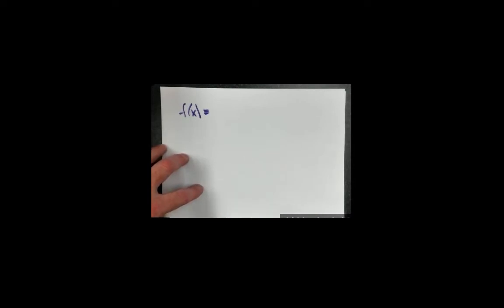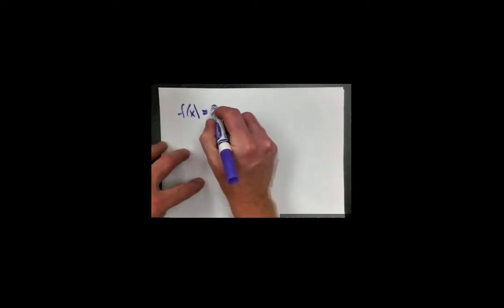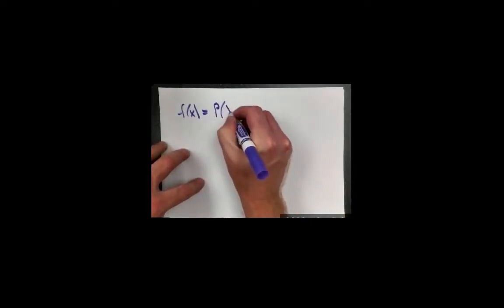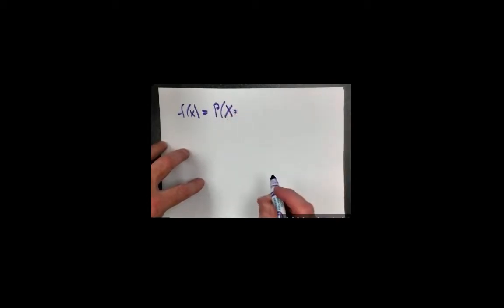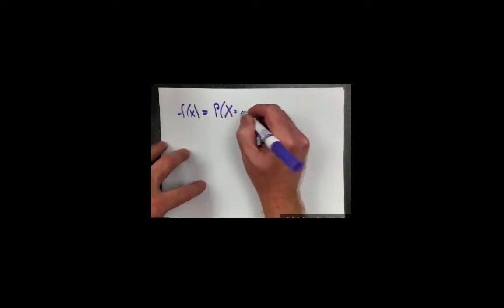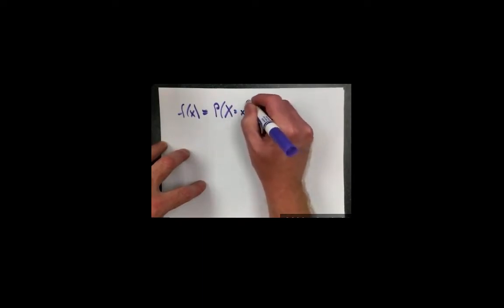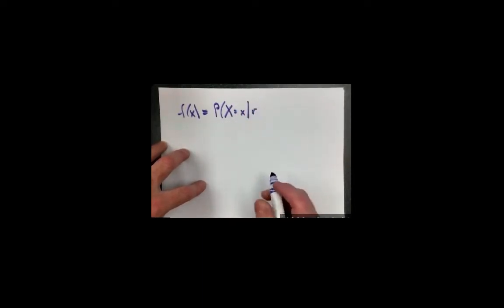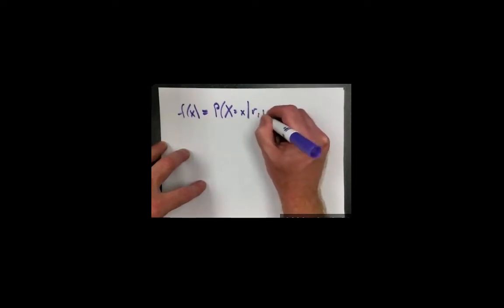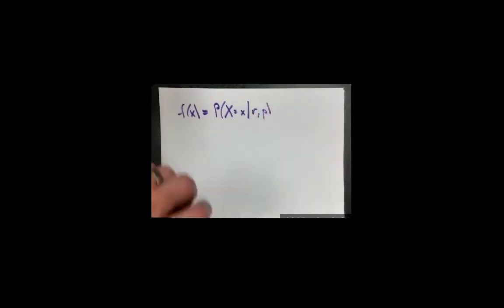What we're going to do is find the expected value for the negative binomial distribution. Recall, the probability mass function for the negative binomial distribution is the probability of observing the random variable X, which is the total number of trials necessary to see r successes — capital X equals the value x given r, the number of successes we'd like to see, and p, the probability of a single success.